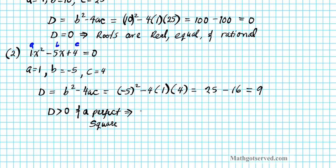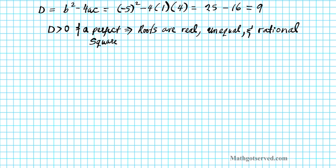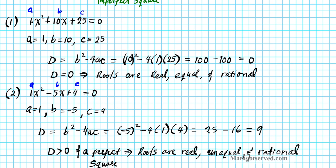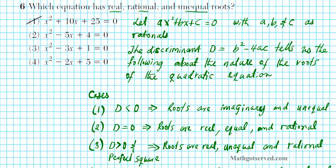The discriminant is 9, which is positive and a perfect square. That implies the roots are real, because we're rooting a positive number. They are unequal, because the discriminant is not zero. And since 9 is a perfect square, the roots are rational. This is exactly case three — real, rational, and unequal. So our answer for this problem is option number two.